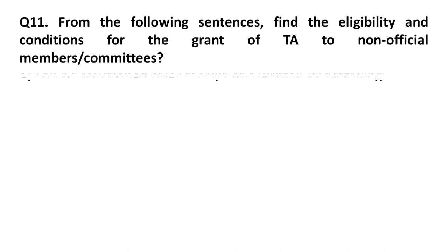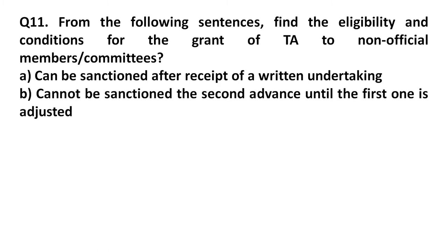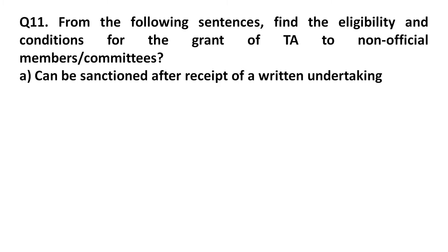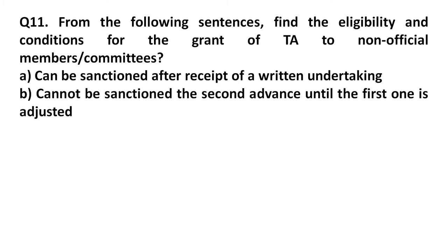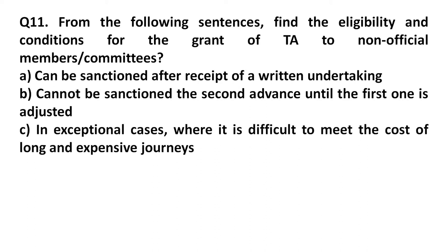Question 11: Find the eligibility and conditions for the grant of DA to non-official members of committees. Option A: Can be sanctioned after the receipt of a written undertaking. Option B: Cannot be sent a second advance until the first one is adjusted. Option C: In exceptional cases where it is difficult to meet the cost of long and expensive journey. Option D: All of the above. Answer: All of the above.